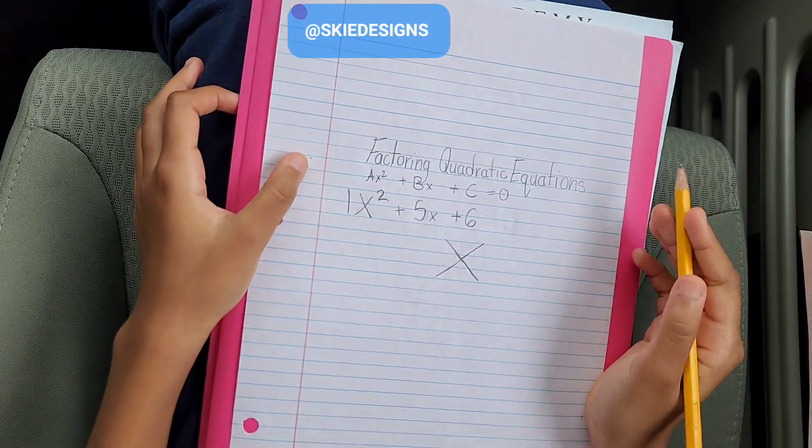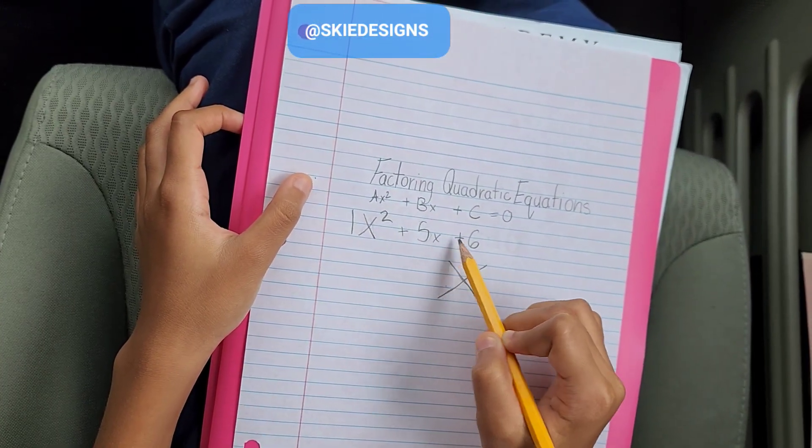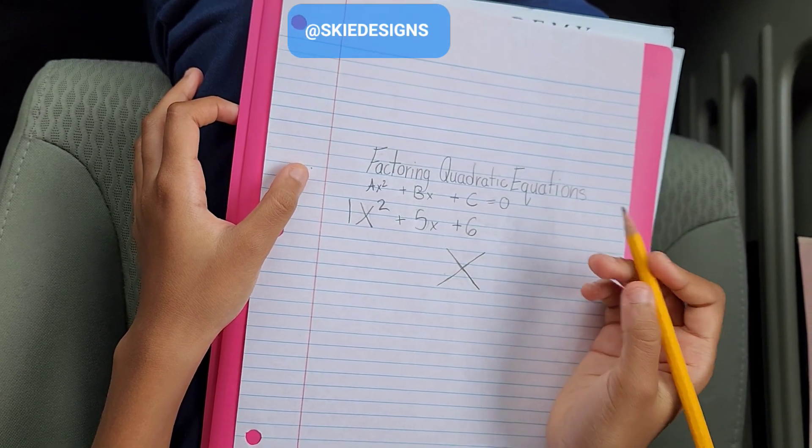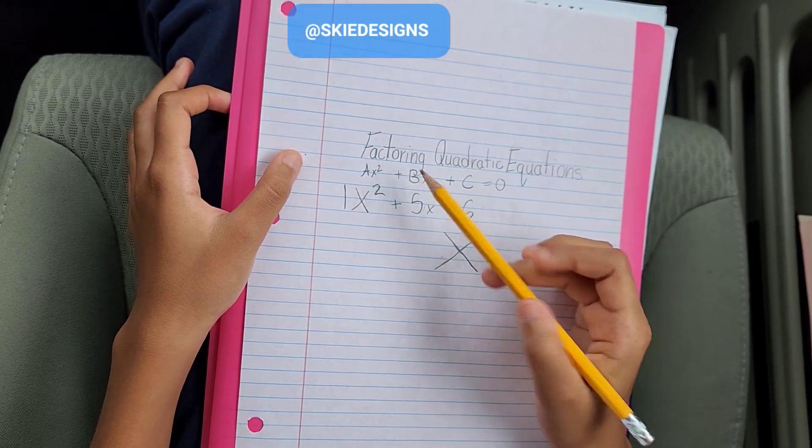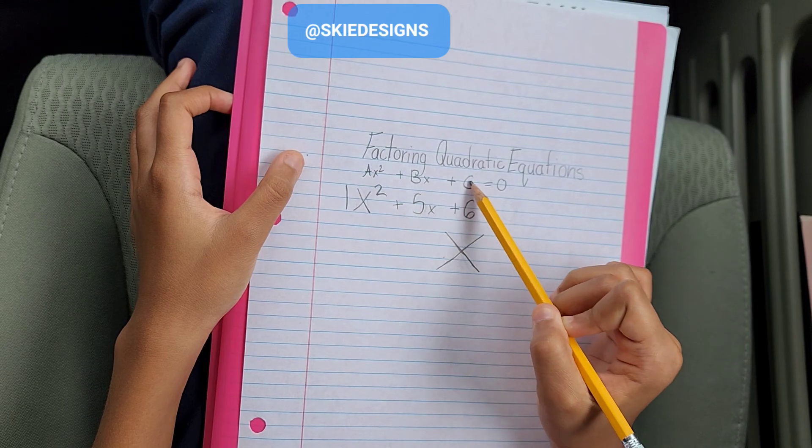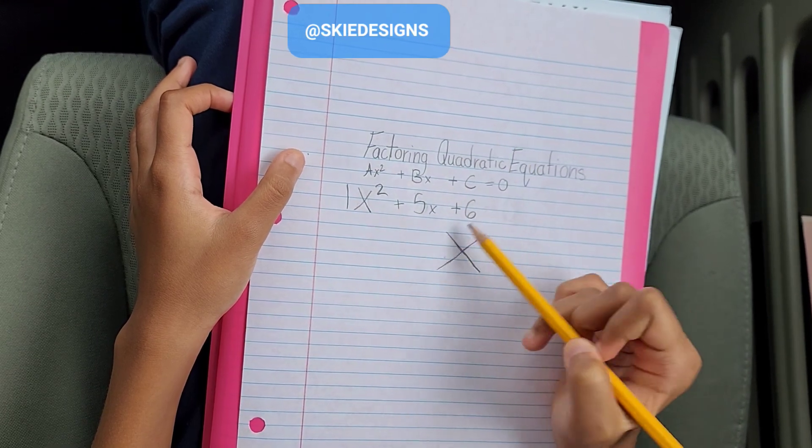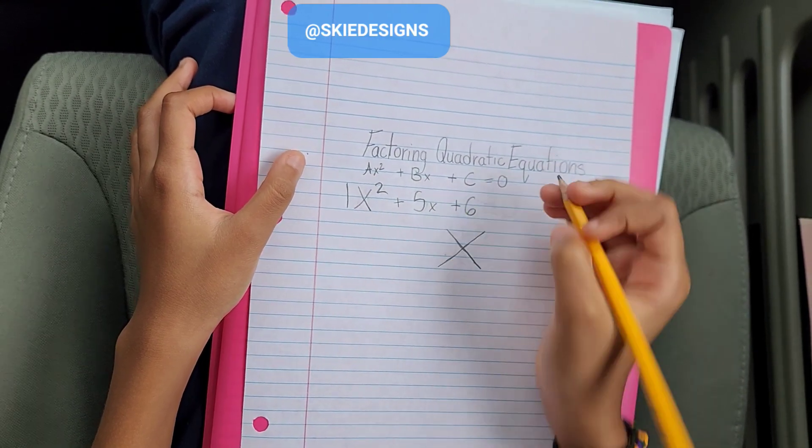Here with me I have the equation x squared plus 5x plus 6. This equation follows the formula ax squared plus bx plus c is equal to 0. So the first thing we have to do is make this equation equal to 0.